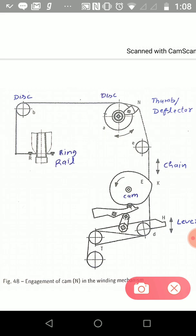The base of the cop is curved on its exterior in order to enable as much yarn as possible to be taken up on the package. This curvature arises because of a mechanism called thumb deflector or cam.